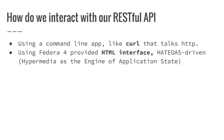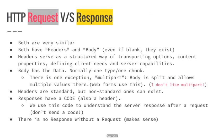How do we interact with this API? We have two simple ways: using a command line app like curl that can talk HTTP, or using the Fedora 4 provided HTML interface. It's a HATEOAS-driven interface that's pretty simple to use and allows you to navigate through your resources, create new resources, and make almost every single functionality that you can get through curl. But it's pretty basic.